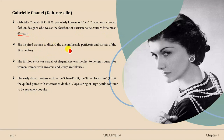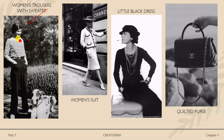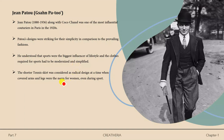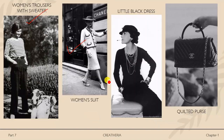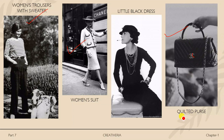Coco Chanel inspired women to discard uncomfortable petticoats, large hoop skirts, and corsets. Her fashion style was casual yet elegant. She was the first to design trousers for women, teamed with sweaters and jersey knit blouses. Her early classic designs include the Chanel suit. She is very popular for the little black dress — a classic that never goes out of style and remains popular in the market today. She also designed the iconic quilted purse with the double-C logo.